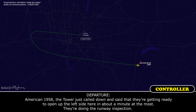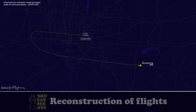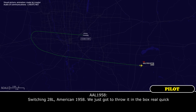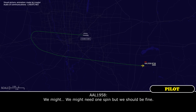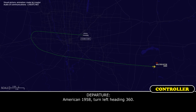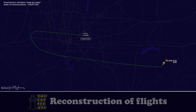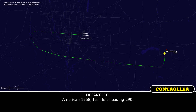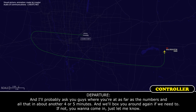American 1958, tower just called down — they're getting ready to open up the left side here in about a minute at the most. They're sending them to do the runway inspection. So if you want the longer runway because you're heavy, runway 28L will be available if you prefer that. Switching to 28L, American 1958 — we've got to plug it in the box real quick. Okay 1958, roger, and I'll turn your base here in about three or four miles. If you want something different, let me know. Yeah, we might need one spin but we should be fine. Okay, I'll bring you around.